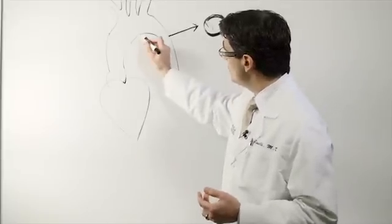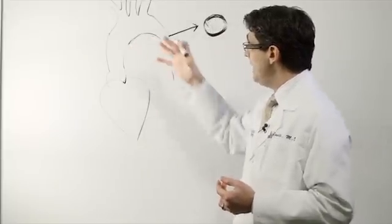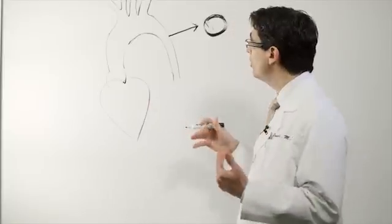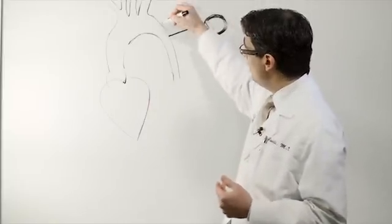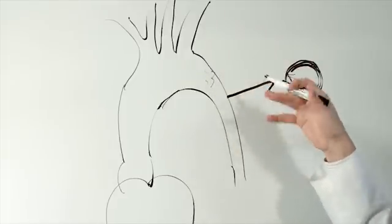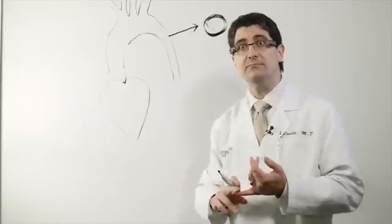Those tears can occur any place along the length of your aorta, but most commonly they'll either occur in the descending aorta up here beyond the aortic arch. That kind of dissection is often referred to as a type B dissection.